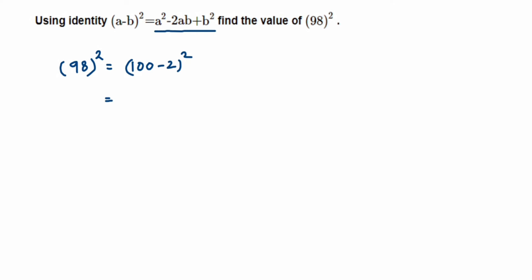If I compare this (a - b)², we got (100 - 2)². So here, in place of a we have 100, in place of b we have 2. So we have to just substitute in the identity.